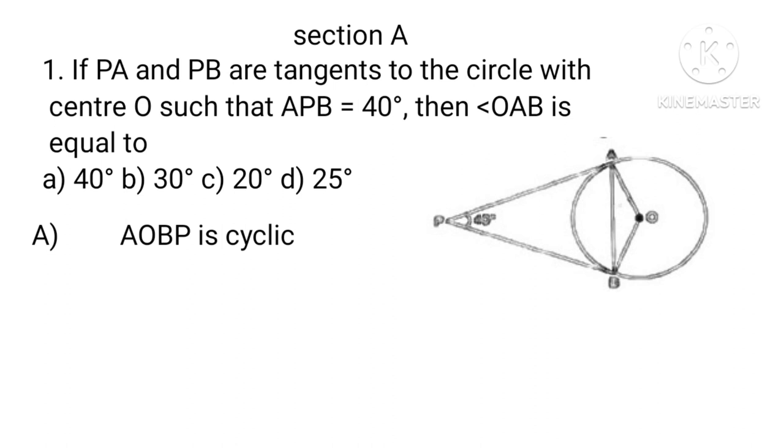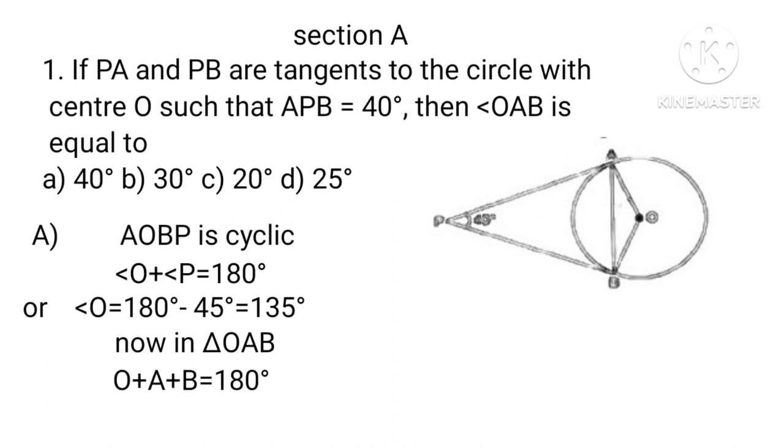Since AOBP is cyclic, therefore angle O plus A equals 180 degrees, or angle O equals 180 degrees minus 45 degrees equals 135 degrees. Now in triangle OAB, angle O plus A plus B equals 180 degrees, but A equals B. Therefore, 2A equals 180 degrees minus 135 degrees equals 45 degrees. Hence A equals 22.5 degrees.